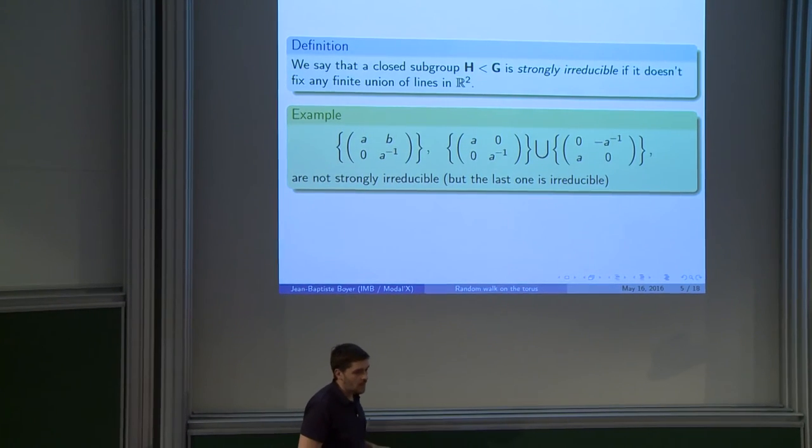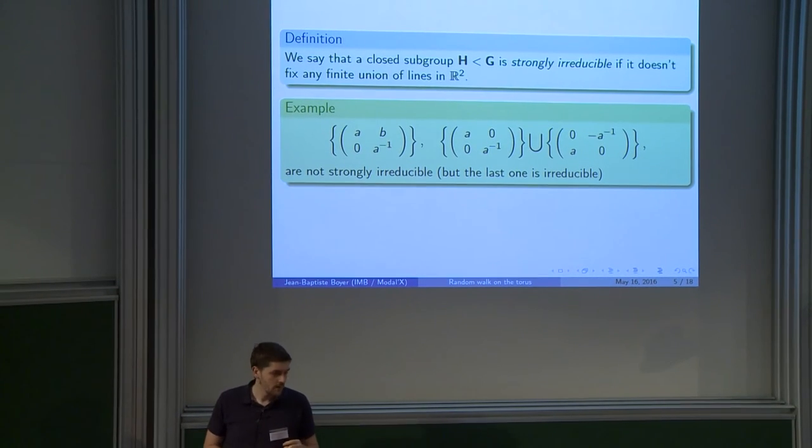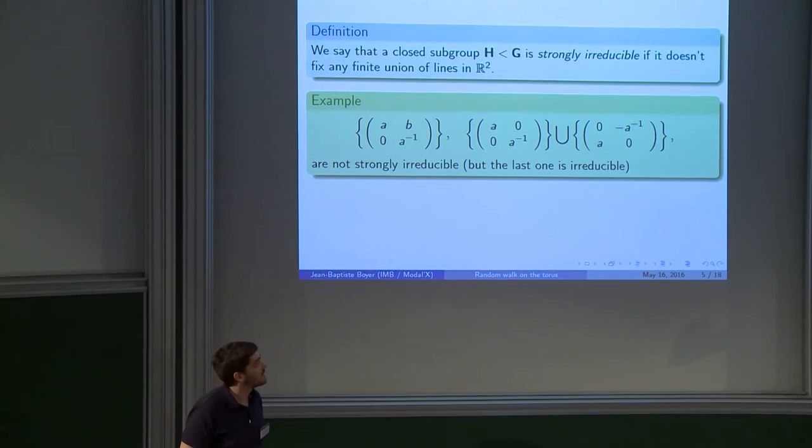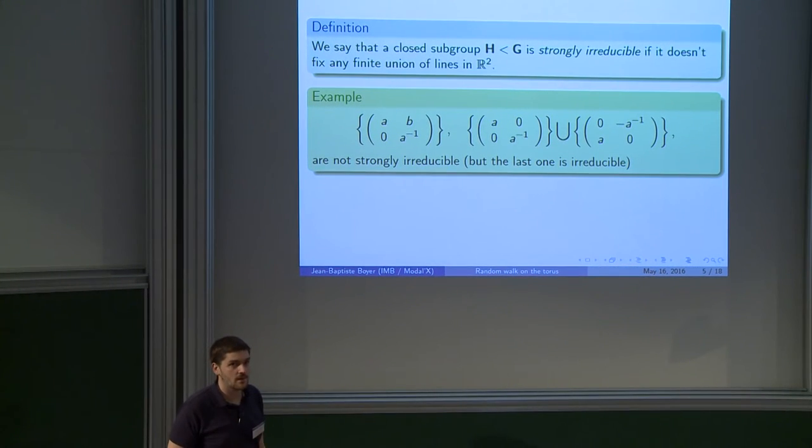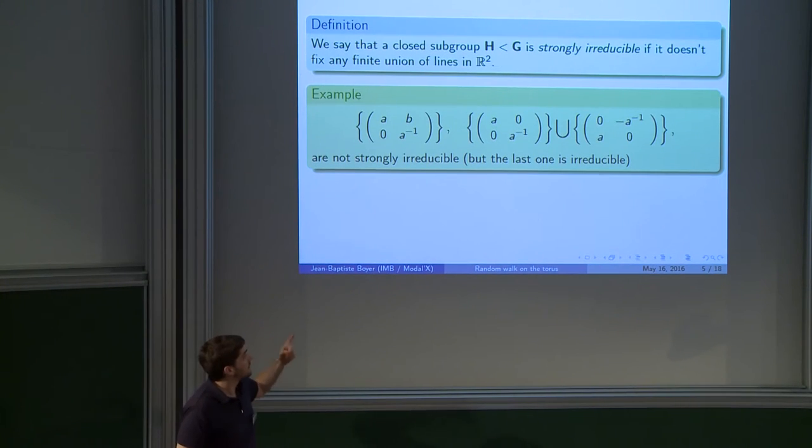I have to make assumptions on the support of my measure. So first assumption, I will say that a subgroup of SL₂(R) is strongly irreducible if it doesn't fix any finite union of lines in R². And I gave you two examples. In the first one, I fixed a line and in the second one, I fixed two lines.